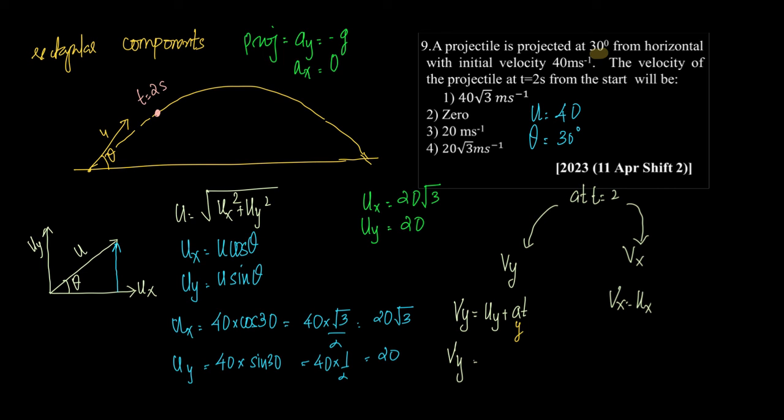So what would be vy? vy would be equal to, what is uy? uy from here is 20. 20 plus what is ay? ay is minus g which is equal to minus 10. So 20 into minus 10 into, we are asked to find out at t equals 2 seconds, into 2. And therefore, vy is equal to 20 minus 20 which is equal to 0.